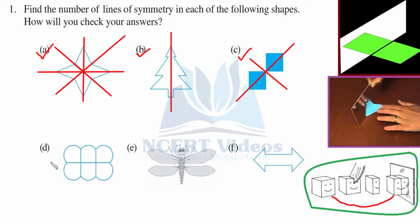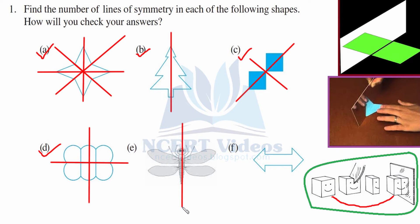Part D also has two lines of symmetry — one horizontal and one vertical. You will be able to see the other part of the figure in the mirror if you place it on these two lines. This is all about lines of symmetry — you just have to find the place where the mirror should be placed to get the other part of the picture. For part F, it again has two lines of symmetry. You can check your answers practically with the help of a mirror.